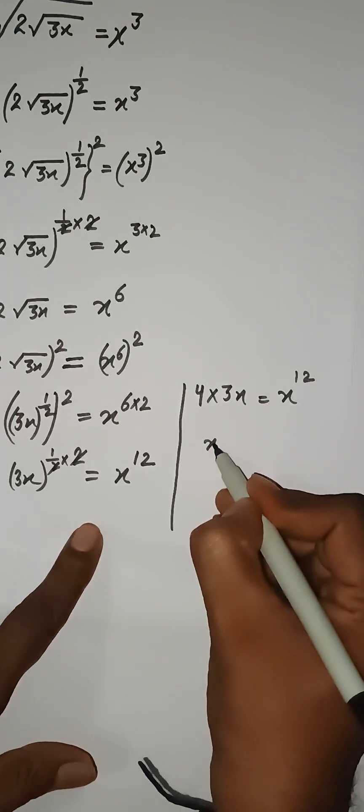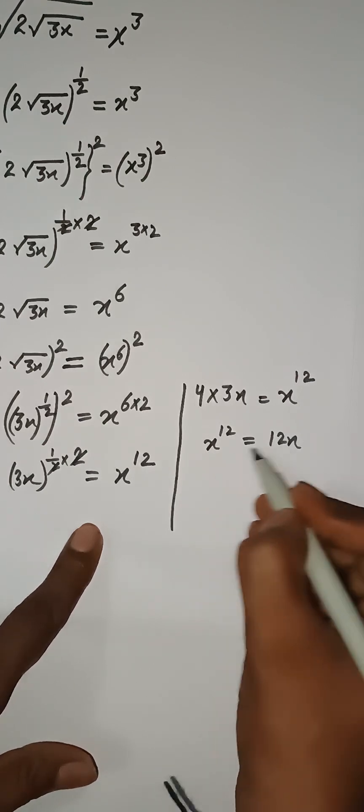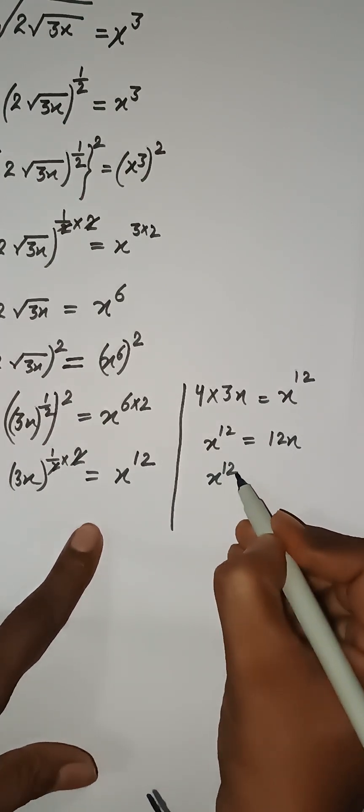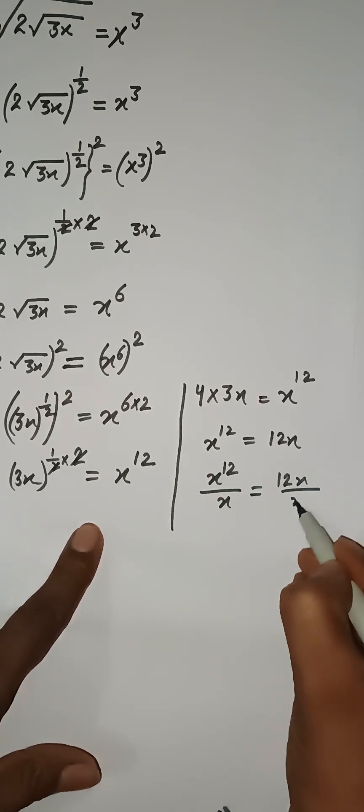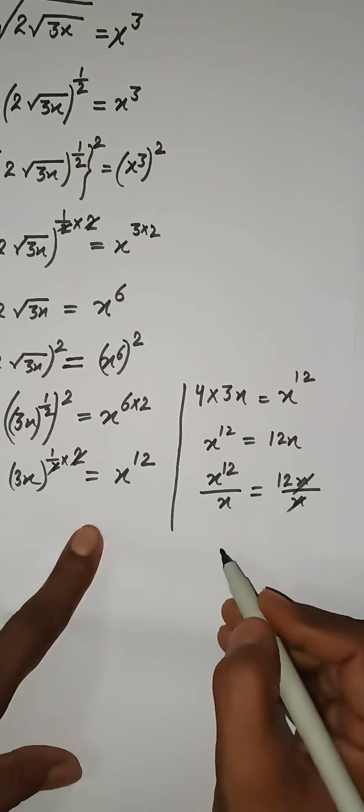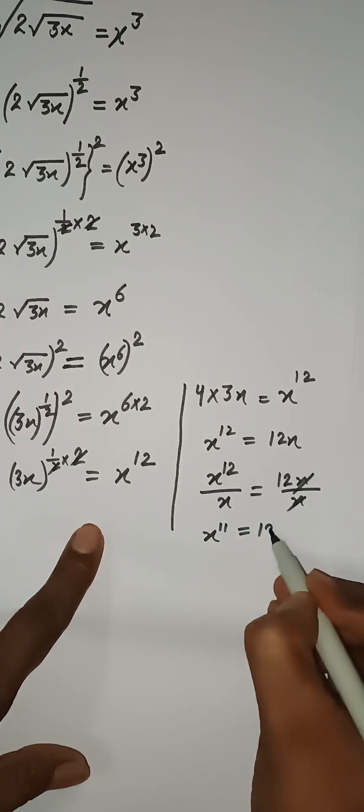In this way we can write x¹² equals 12x. If I am dividing both sides by x, so I can have x¹² divided by x and here 12x divided by x, x cancels and here we have x¹¹ that is equal to 12.